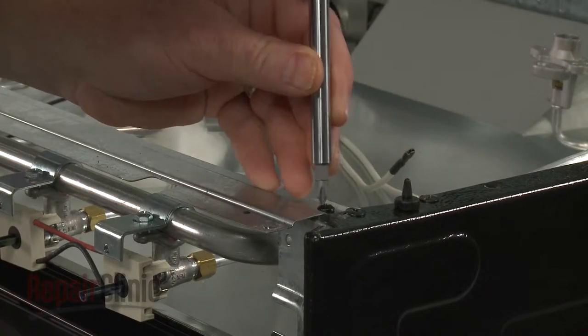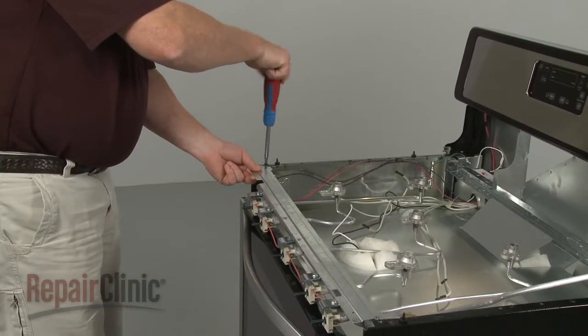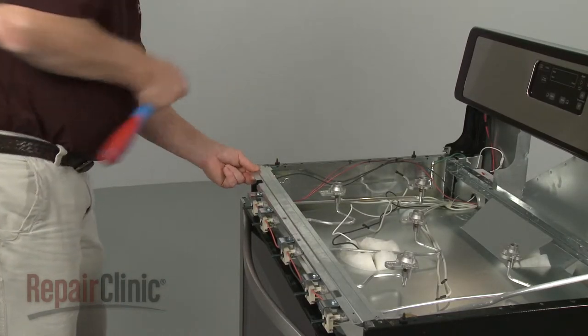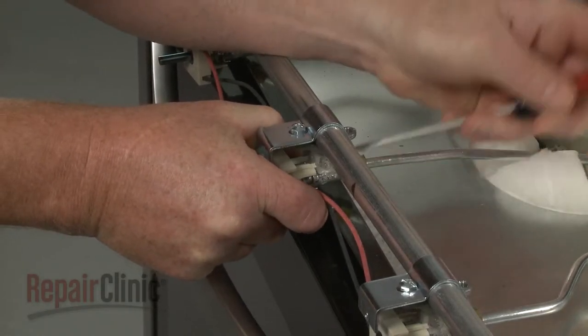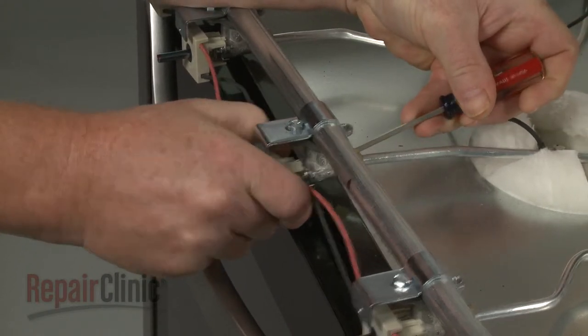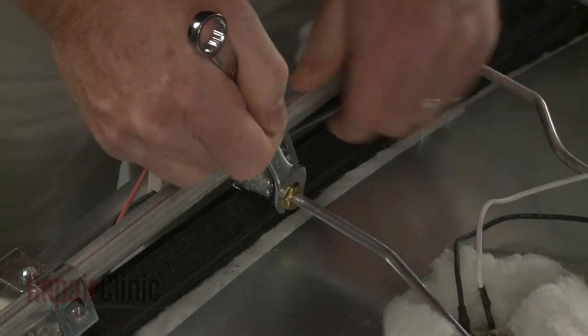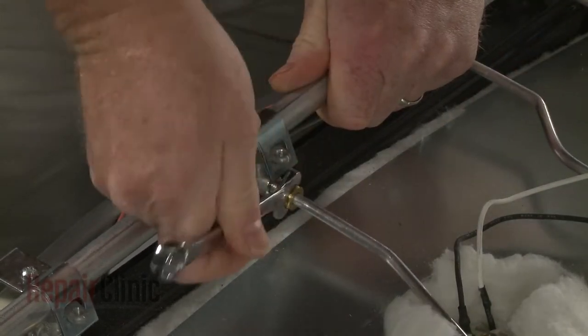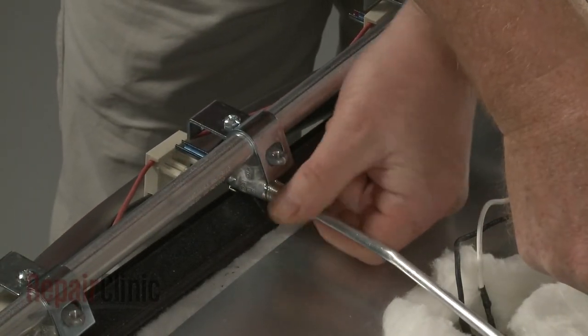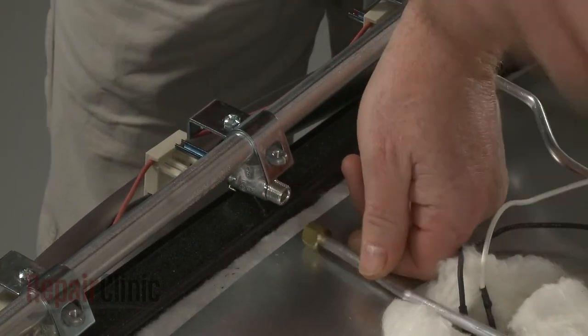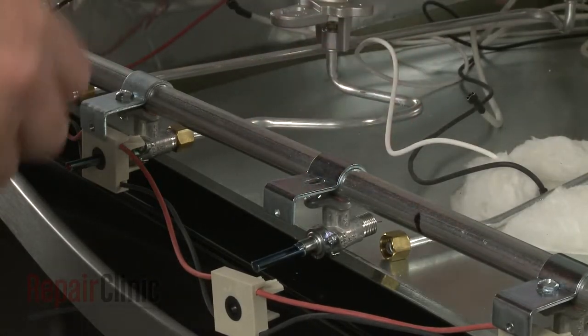Next, unthread the screws to release the support bracket. Detach the appropriate spark switch. Use a half-inch wrench to unthread the nuts securing the gas tube to the appropriate burner valve. Now unthread the screws securing the mounting clamp and remove the old valve.